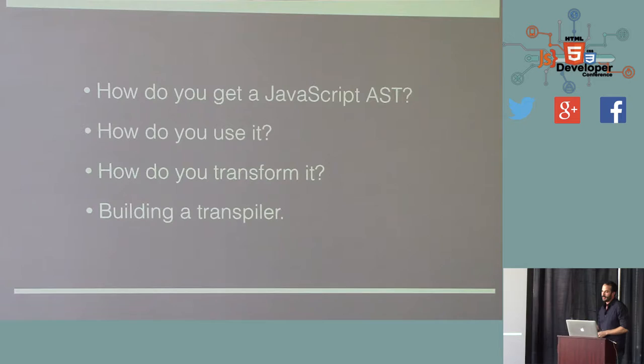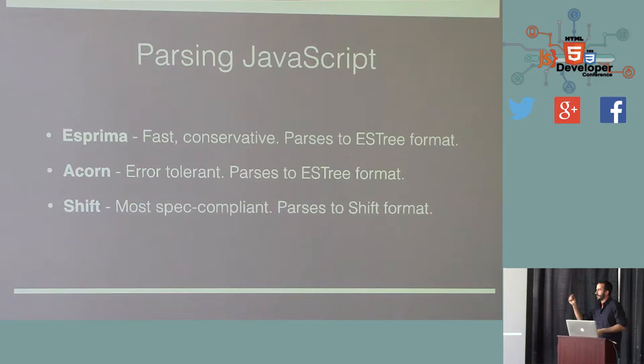So the rest of this talk, we're going to go through how you might get a JavaScript AST, how you're going to use it, how you might transform it, what does the transformation actually mean. And at the end, we're going to build a simple transpiler. It's not nearly a Babel scale, but it is something that definitely works. It transpiles something and definitely will put you on the path to doing more advanced transformations.